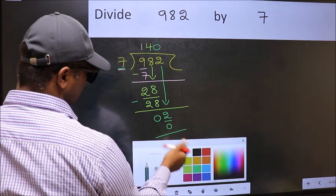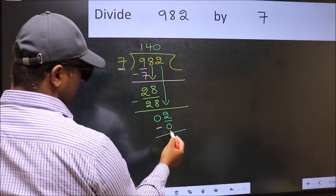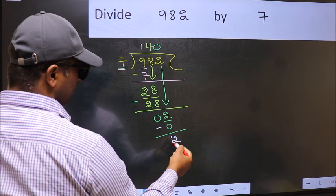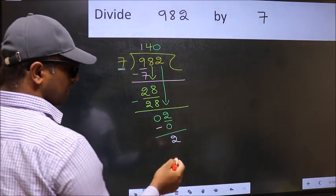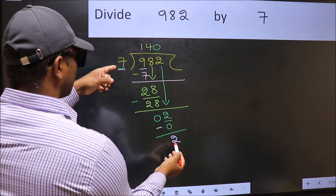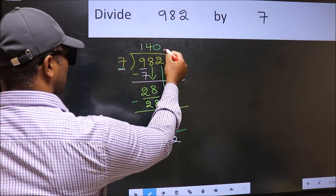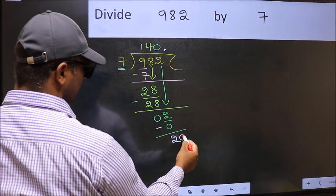Now you should subtract. 2 minus 0, 2. Over here, we did not bring any number down, and 2 is smaller than 7.